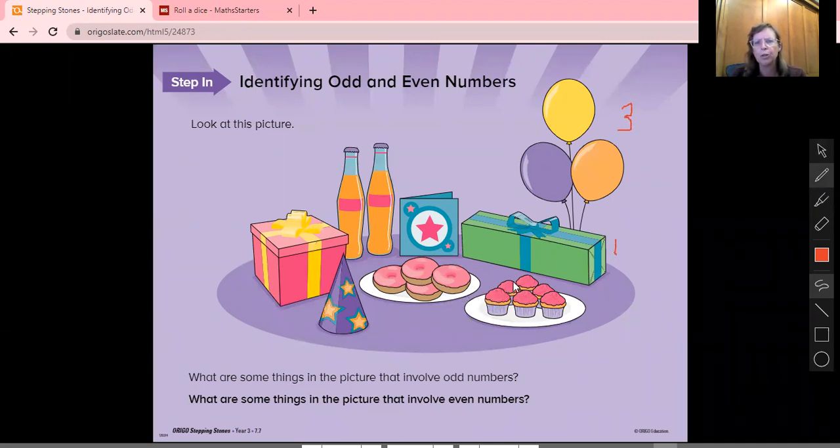We've got one, two, three, four, five, six. No, that's an even number. One, two, three, four. That's an even number. We have got one hat. And the hat has got three stars on it. Both of those are odd numbers. We've got one parcel over here. We've got a card here with one big star and two small stars. And we've got two drinks.